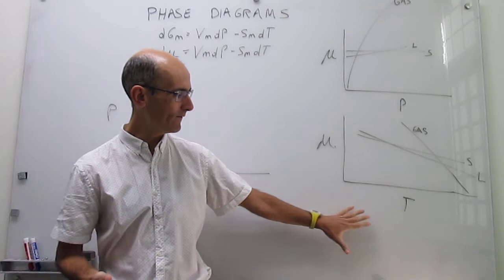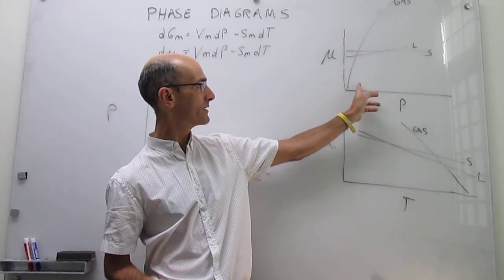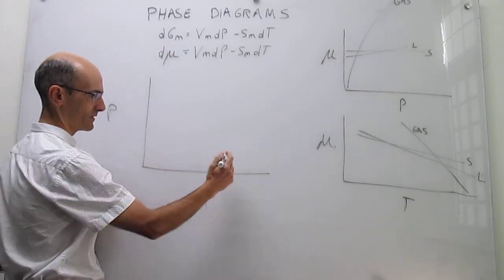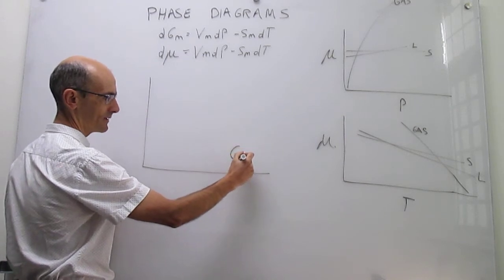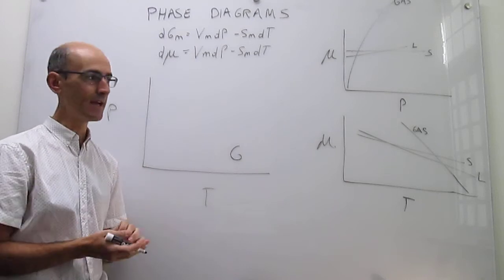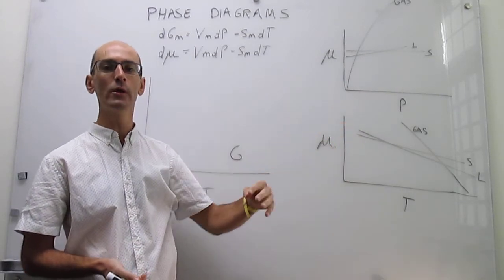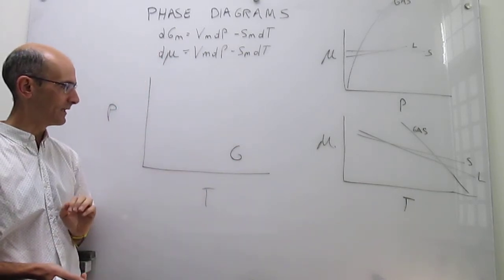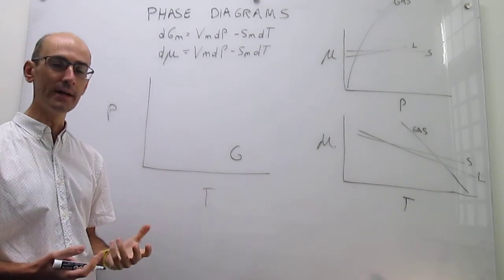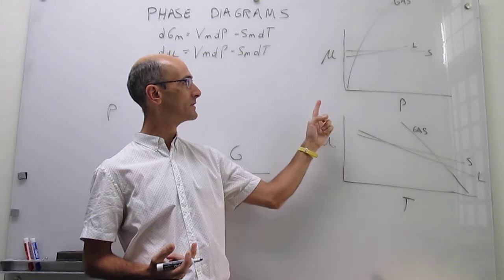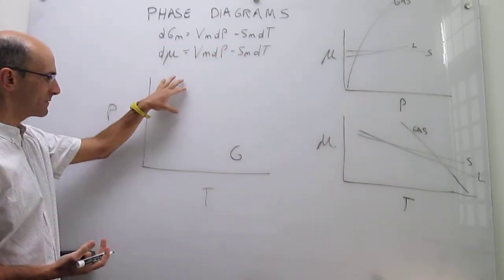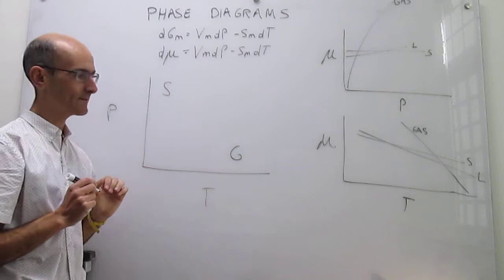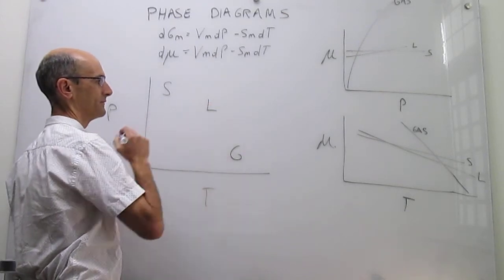We know that at very high temperatures and low pressures, the gas is the stable phase. So in that region of the diagram, the most stable phase should be gas — in the phase diagram we only draw the most stable phase. At the other end, at low temperatures and high pressures, the solid should be the stable phase. And then in the middle, you are going to have the liquid phase. This is how phase diagrams generally look.